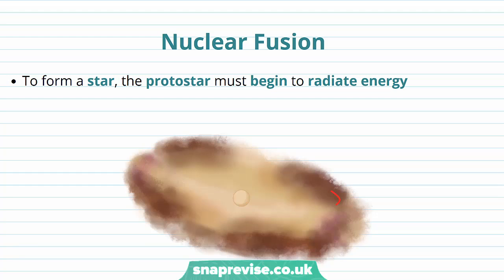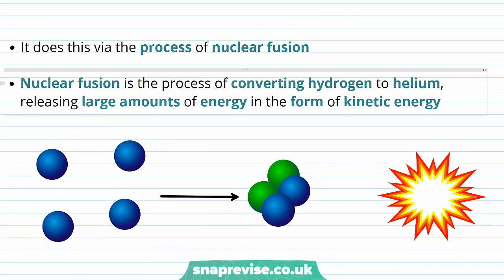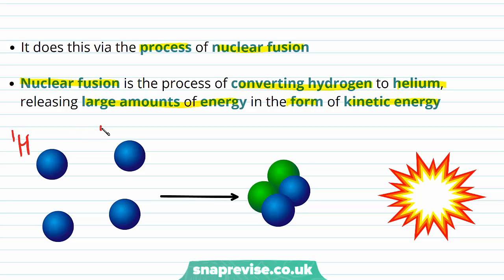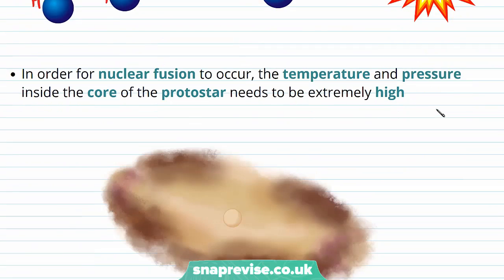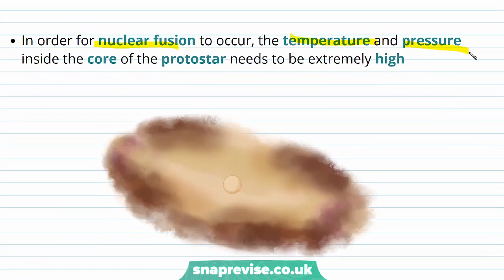To understand how a star can evolve from a protostar to a star, we need to understand a process called nuclear fusion. To form a star, the protostar must begin to radiate energy, which it does via the process of nuclear fusion. Nuclear fusion is the process of converting hydrogen to helium, releasing large amounts of energy in the form of kinetic energy. Let's consider these four hydrogen nuclei here — these can fuse together to form one helium atom and release a lot of energy in the process.